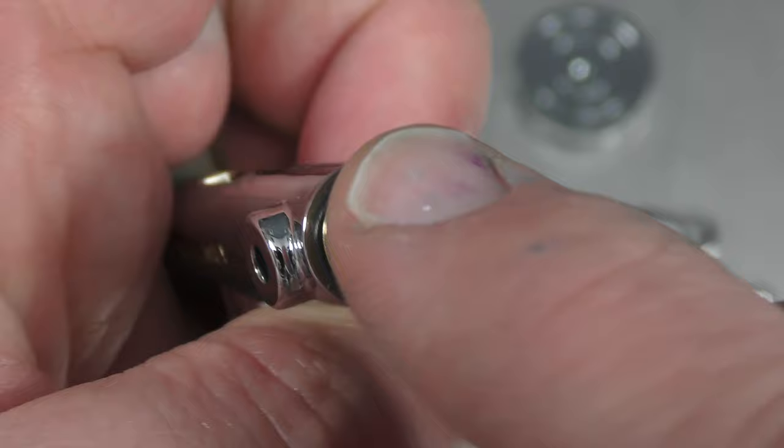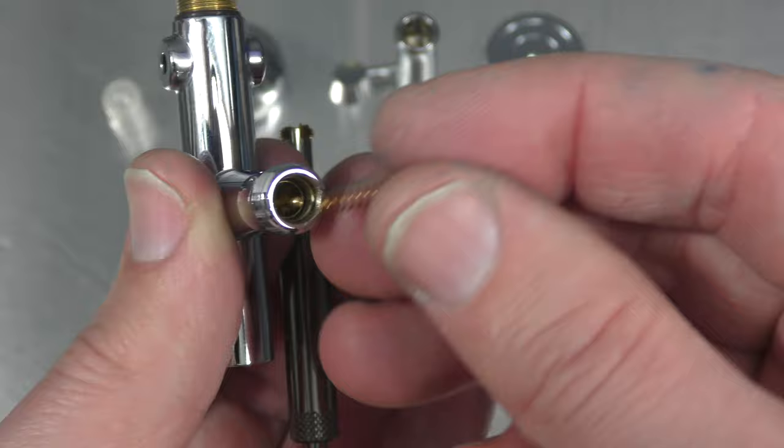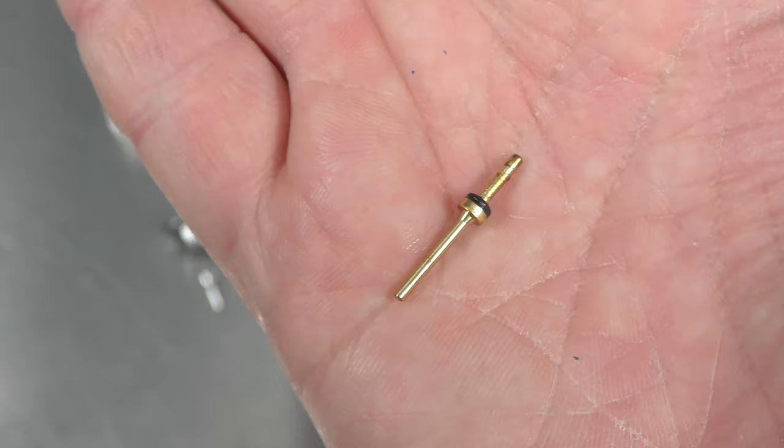And now to get into this area here we need another tool. Just unscrew. Just be careful because that spring wants to drop out. And if you lose that spring you'll need to get another one because otherwise your trigger won't go up and down. That's the little plunger where the trigger presses that down to activate the air.